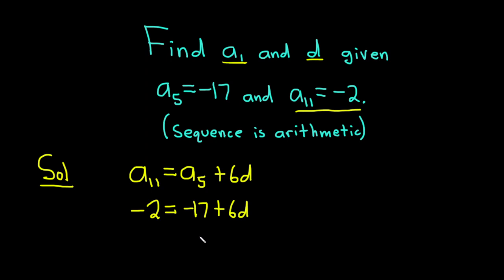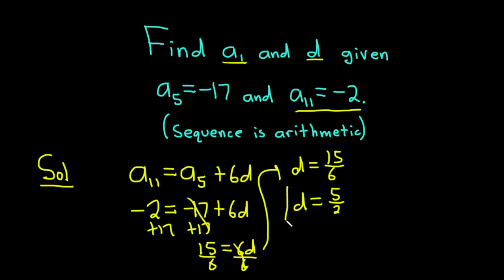We can solve this equation for d. We can add 17 to both sides. We get 15 equals 6d. And then finally we can divide by 6. So we get d equals 15 over 6. This should reduce: 3 goes into 15 five times and 3 goes into 6 two times. We get that little d is equal to 5 over 2. I'm going to put that in a box because that's an accomplishment.